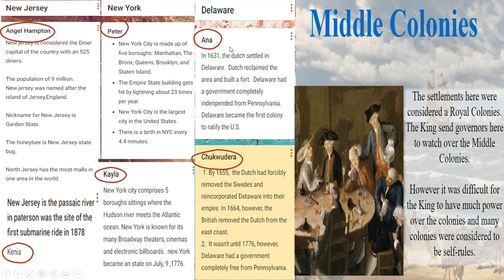Angel and Kenya found information about New Jersey, Peter and Kayla about New York, and Anna and Chuck about Delaware — three of the middle colonies. The settlements here were considered a royal colony; the king sent governors to watch over them. However, it was difficult for the king to have much power, and many colonies were considered self-ruled, meaning they ruled by themselves — it was not a group collaboration.